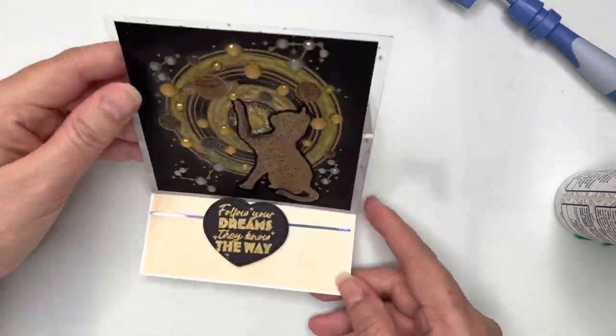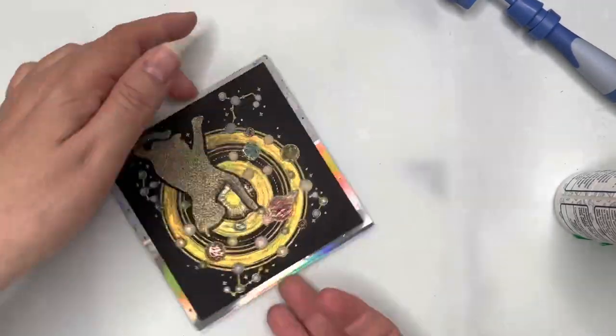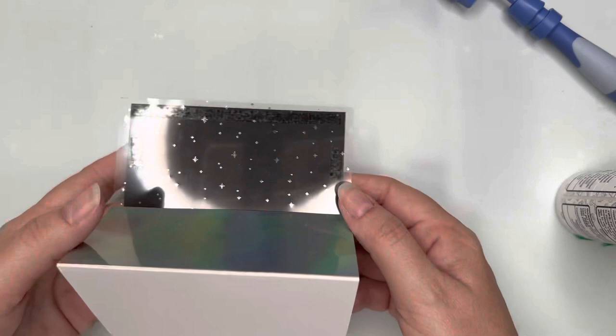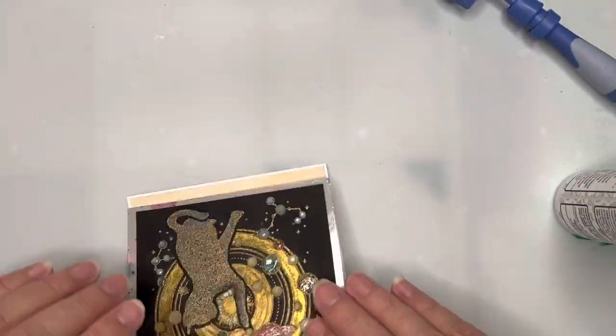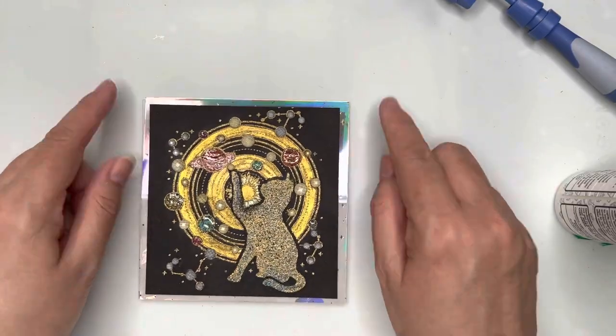So that's how the card will stand when it's all ready to go. I'm just showing you from the back, you can see silver stars matching back with that silver holographic paper to get a nice view front and back.